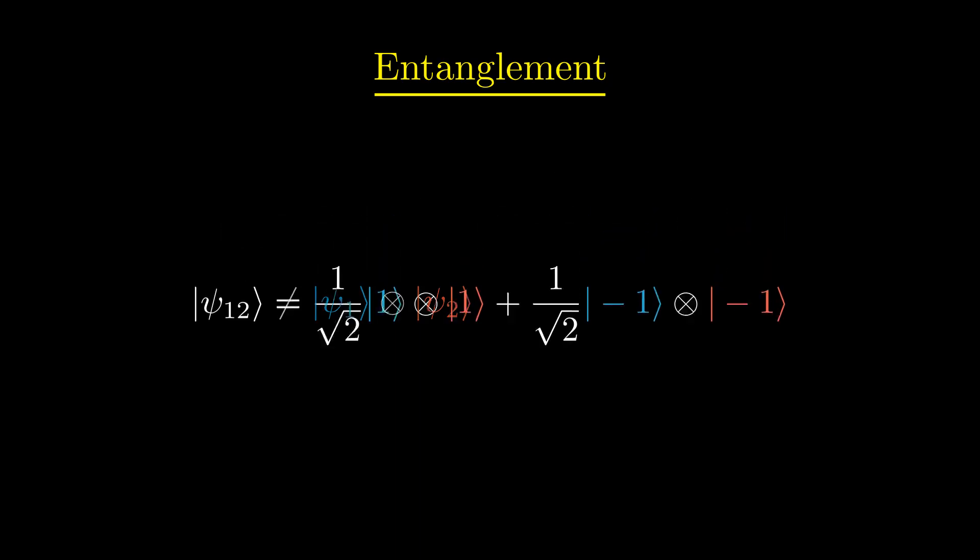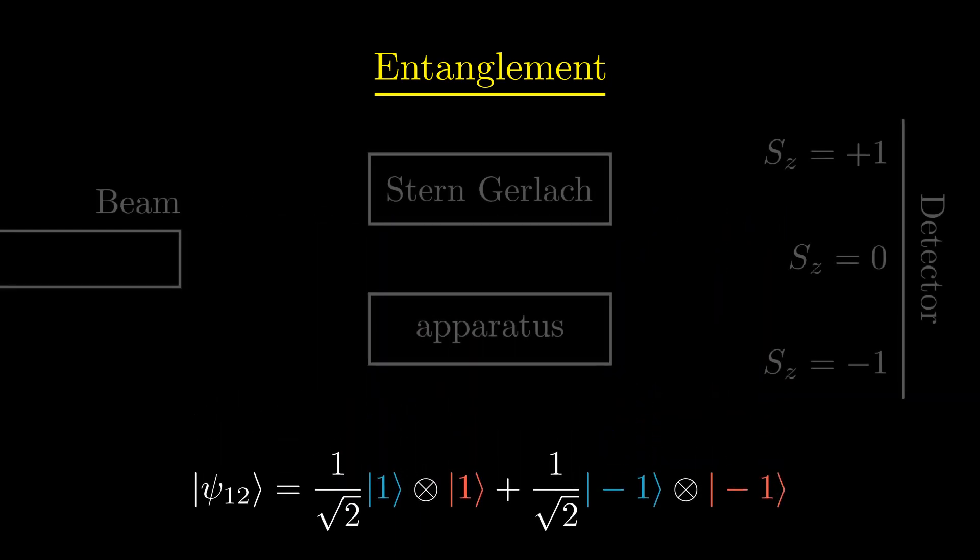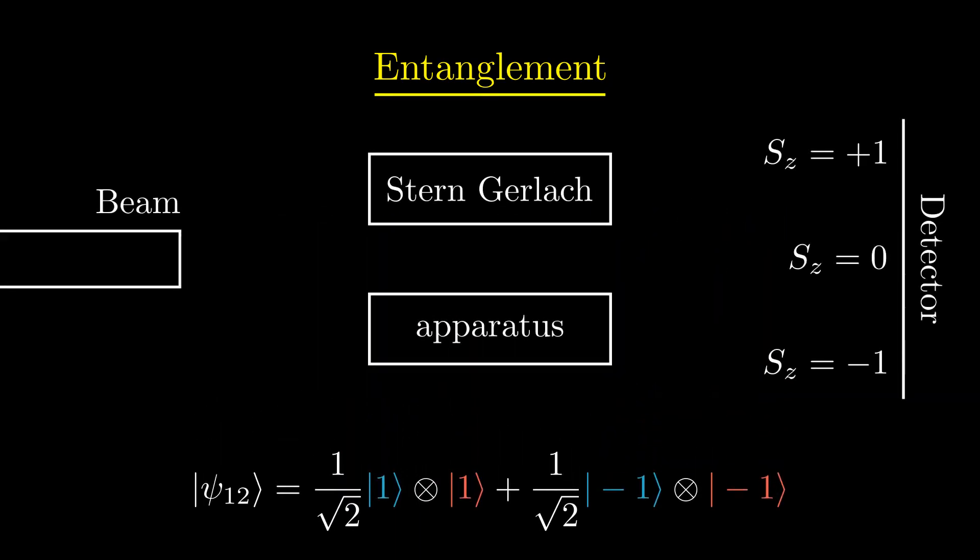In this example, consider measuring the spin along the z-axis of particle 1, which turns out to have eigenvalue of plus 1. This means that the other particle must now also be observed to have spin eigenvalue plus 1.